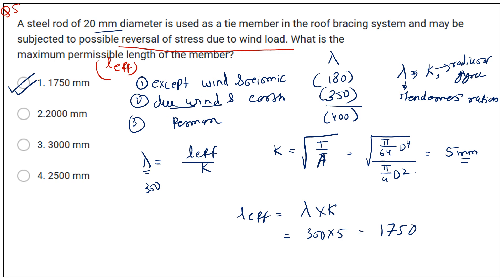To solve these kinds of questions, you need to know the slenderness ratio table with its values, the slenderness ratio formula λ = L_effective / K, the radius of gyration formula K = √(I/A), and the moment of inertia formula. This particular question requires 5 to 6 formulas and one chart.